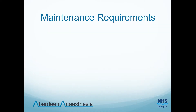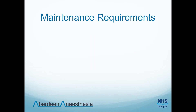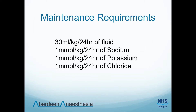We'll now talk about the prescribing of maintenance fluids. The surgical regimen of 2.5 litres of Hartmann's per day is not correct for a number of reasons: it's too much fluid for anyone under 75 kg, it contains too much sodium and chloride, and it doesn't contain nearly enough potassium. A rough guide to daily requirements is 30 mls per kg per 24 hours of fluid, 1 mmol per kg per 24 hours of sodium, and the same again for potassium and chloride. This means a 70 kg person would require 2,100 mls of fluid and 70 mmol each of sodium, potassium and chloride.